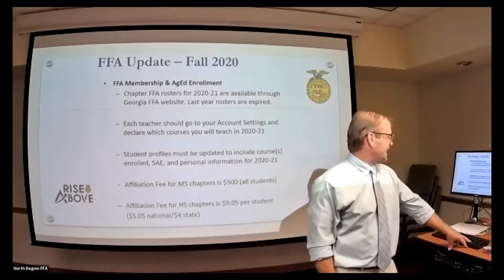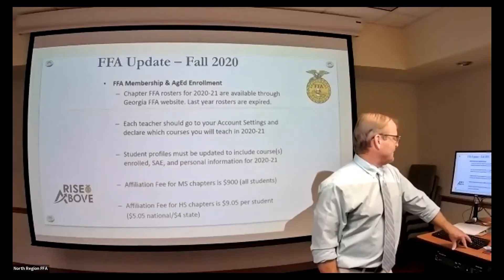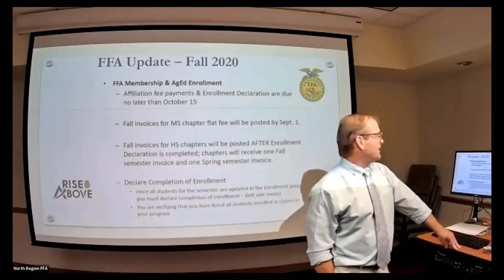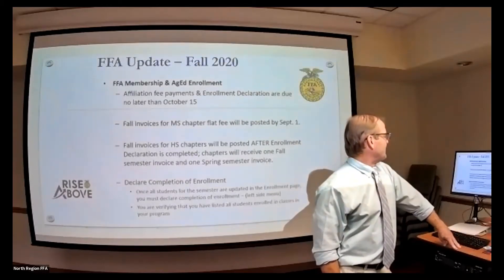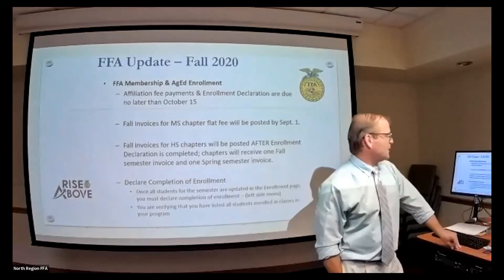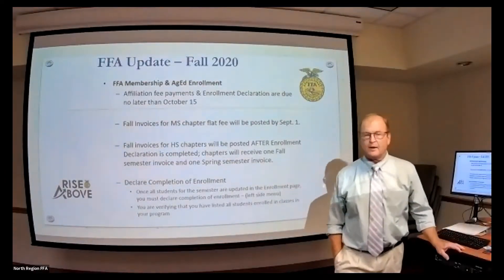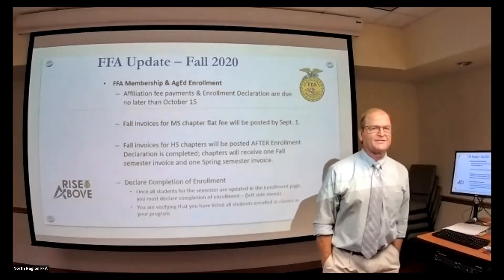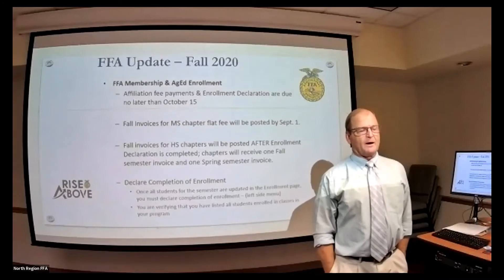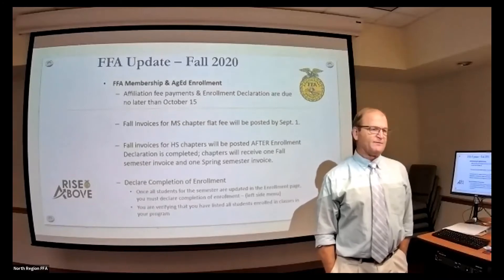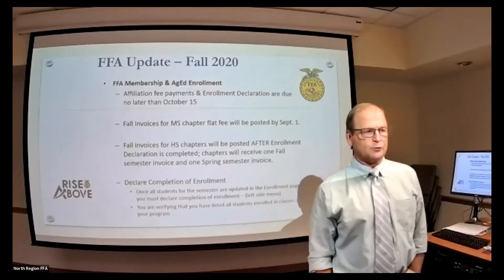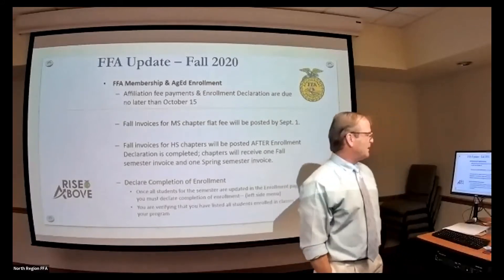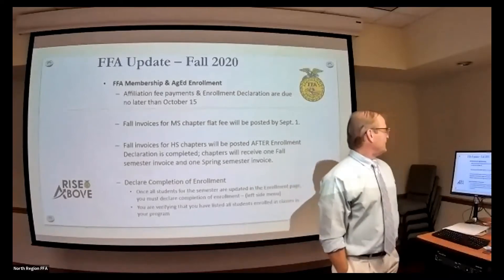The affiliation fee for middle school chapters is $900 again this year. The affiliation fee for high schools is going to be $9.05 per member again this year. The affiliation fee payments and enrollment declaration are due no later than October 15th. The invoices for the middle school flat fee will be posted by September 1st, so hopefully you will have an invoice that you can get to your school bookkeeper in time to get that check posted.